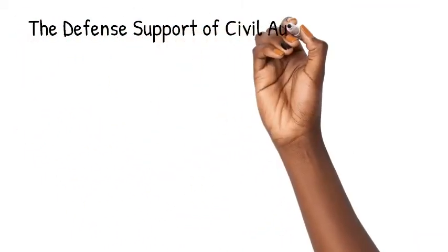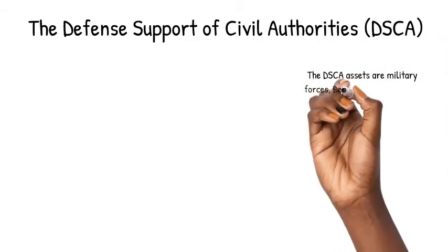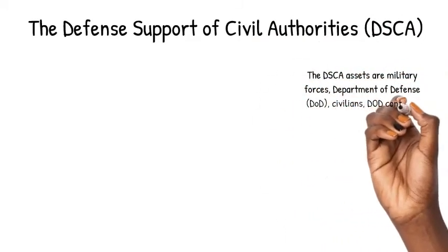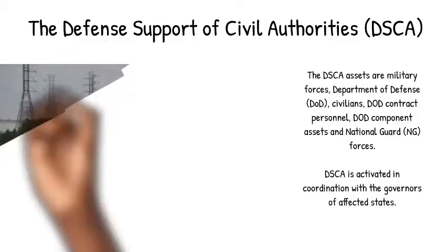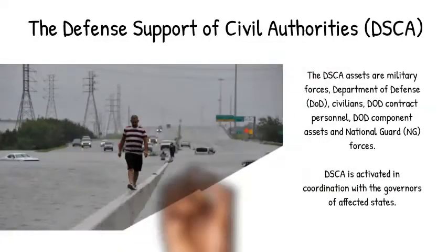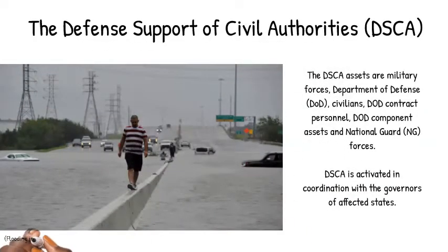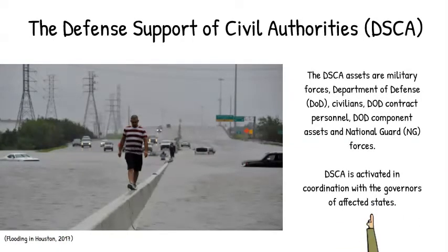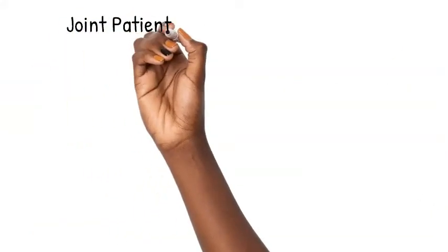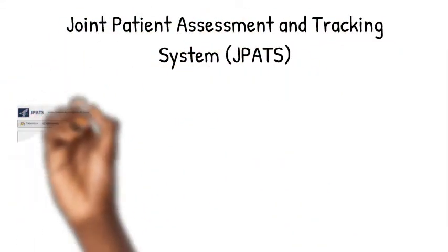Defense Support of Civil Authorities is where the military gets involved. The Department of Defense civilians, DoD contractors, and the National Guard come together to create DSCA missions, which are activated by state governors. This allows military airframes — gray tails — to be brought in to support the response.